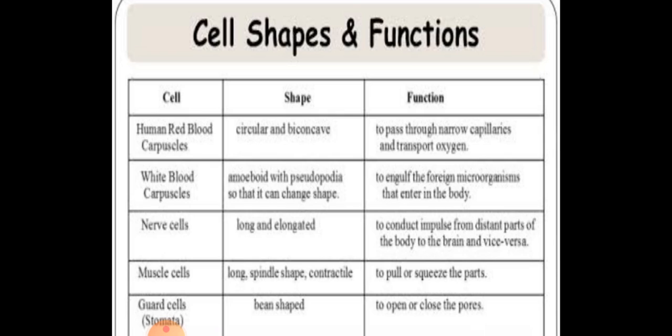Now let's see the different shapes and functions of cells found in animals and plants. RBCs are circular and biconcave because they have to pass through narrow capillaries and transport oxygen. Whatever shape a cell has, it is determined by the function it performs. White blood cells are amoeboid in shape and can change their shape because they have to engulf foreign microorganisms, germs, and bacteria.